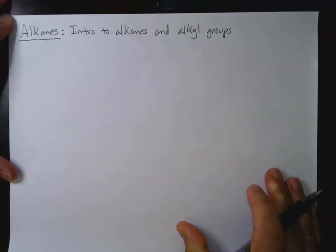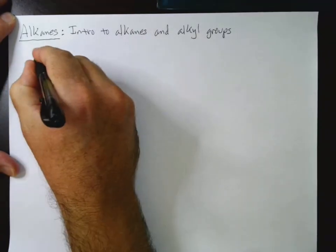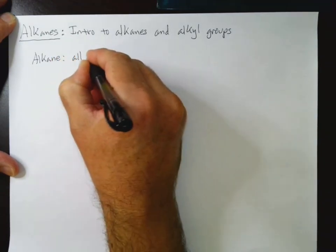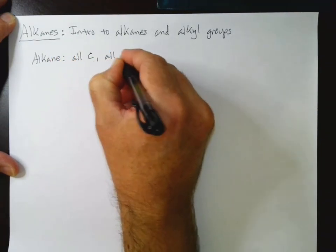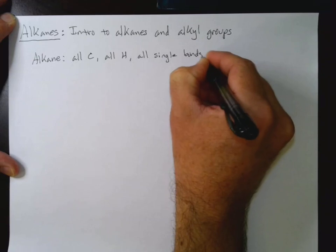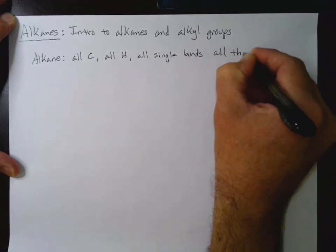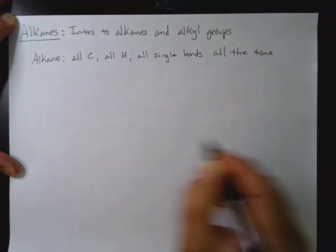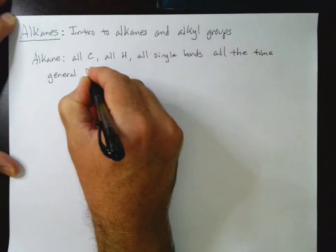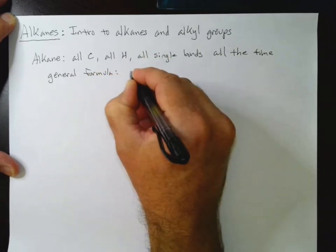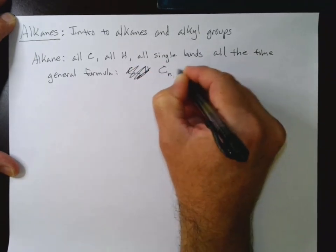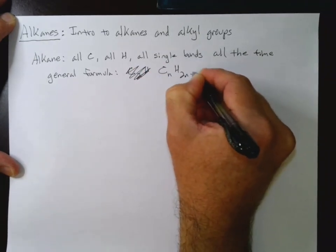All right. Now, what is an alkane? So an alkane is all carbon, all hydrogen, all single bonds all the time. They will have the following general formula: C n H 2n+2. I got a little ahead of myself there, you'll excuse me.